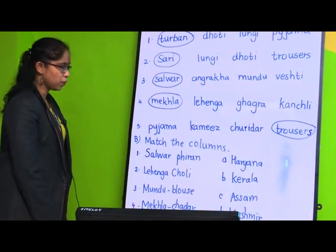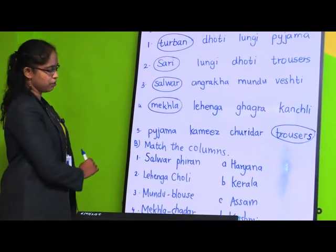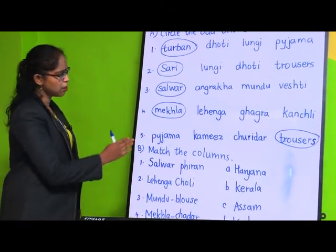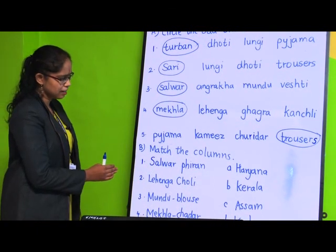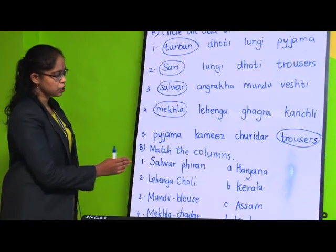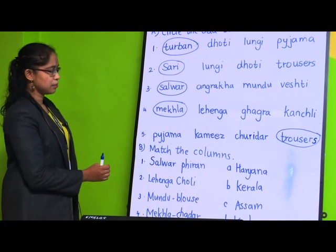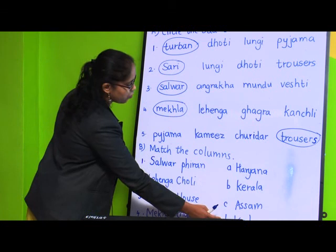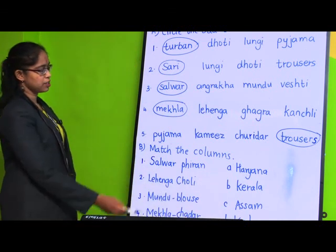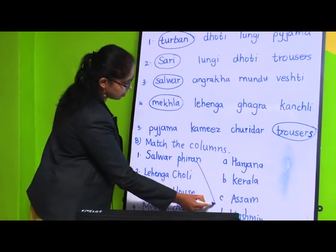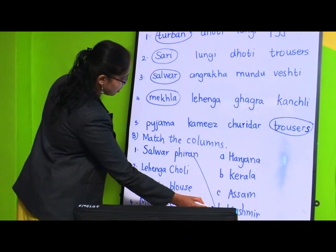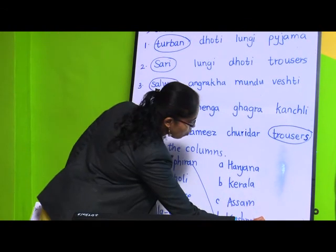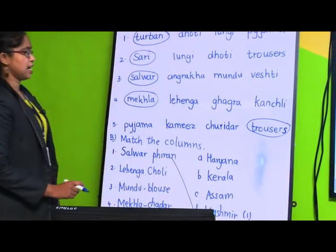Salwar and firang - we have learned in lesson number 7 - it is worn in Kashmir. So the answer for number 1 is D - Kashmir. You can underline it, write the number, or draw a matching line.